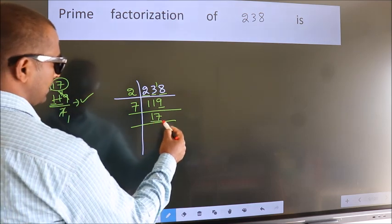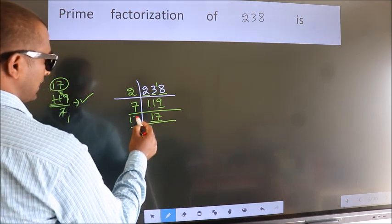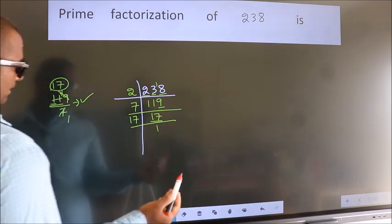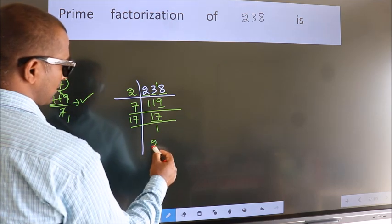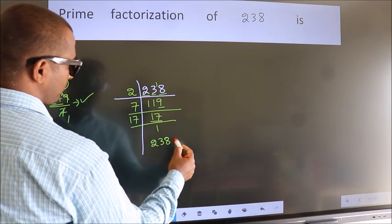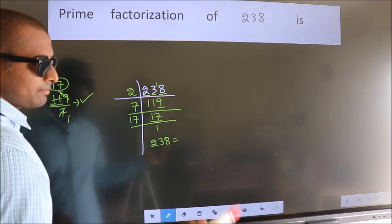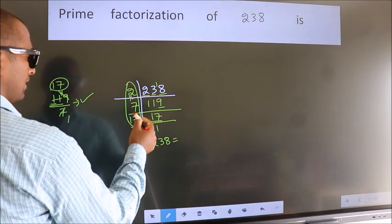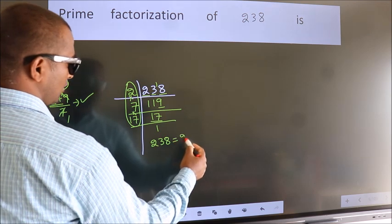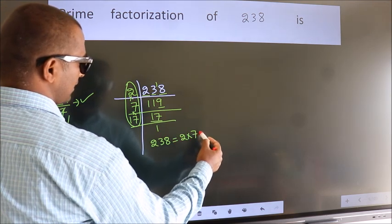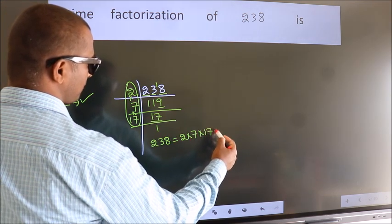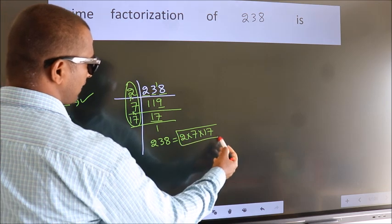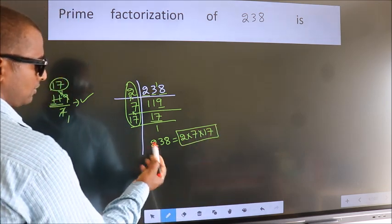Now 17 is a prime number. So 17 times 1 is 17. Therefore, prime factorization of 238 is the product of these numbers: 2 into 7 into 17. This is called prime factorization of 238.